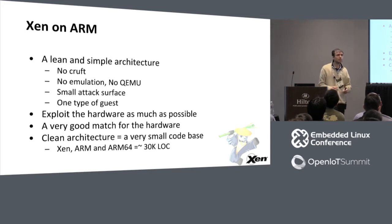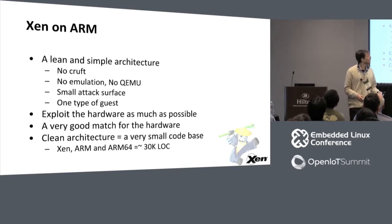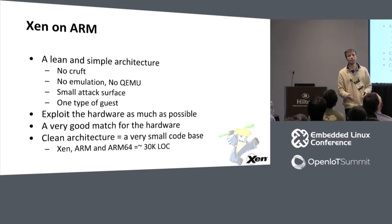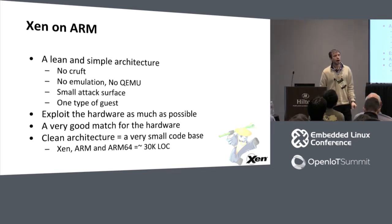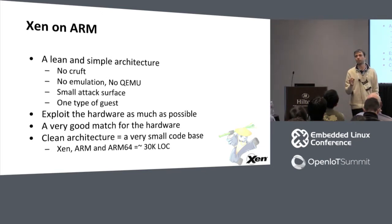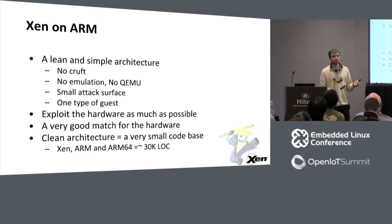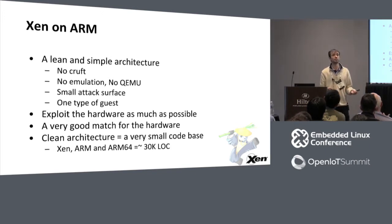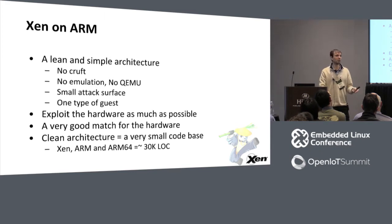Xen on ARM is a port of the Xen hypervisor to ARM and is upstream. However, Xen on ARM is not exactly the same as Xen on x86. When we started the port back in late 2011, we already had several years of experience with Xen on x86. We recognized that Xen on x86 has several limitations, so we took the opportunity to start fresh and remove those limitations. There are a lot of dark corners in Xen on x86, and I'm proud to say Xen on ARM has none of them.